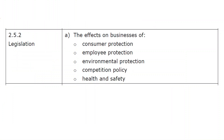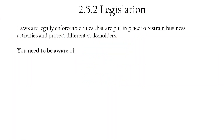This is the first in a short series of videos on 3.5.2 legislation. There are five different types of legislation you need to be aware of. Legislation refers to laws which are legally enforceable rules — they restrain business activities. The purpose of laws is generally to protect a stakeholder: it could be the local community and the environment, employees, or customers.